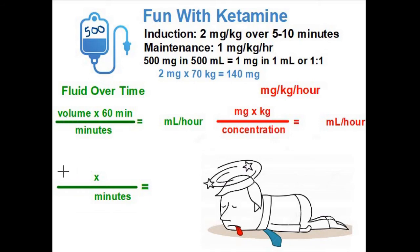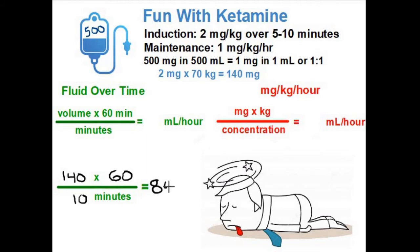Our volume is 140. We're going to multiply by 60 to convert to hours, and then we said we were going to use the 10-minute conservative time frame. 140 times 60 divided by 10 is 840 milliliters per hour. So that's our first answer: 840.